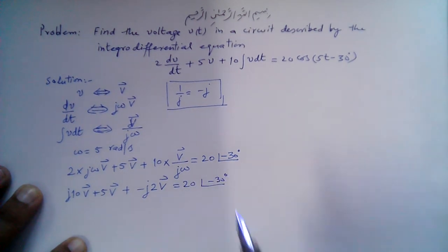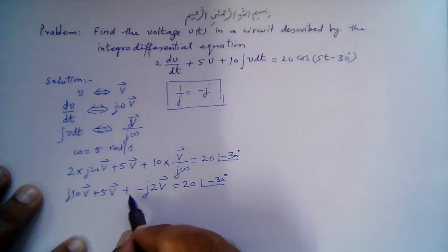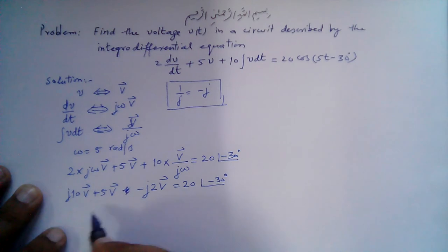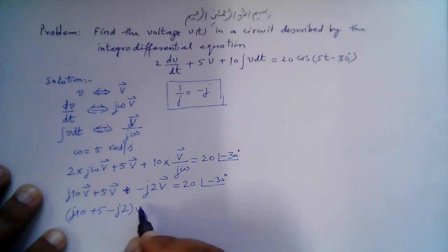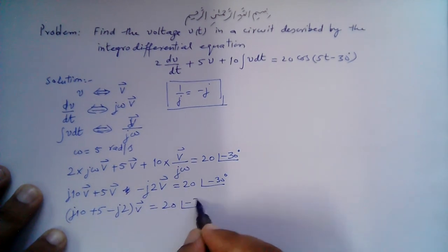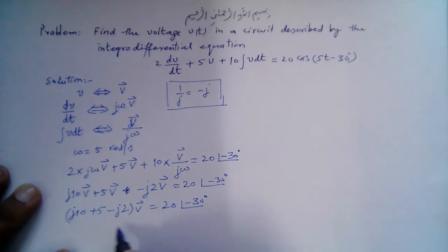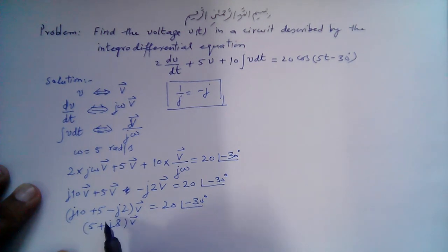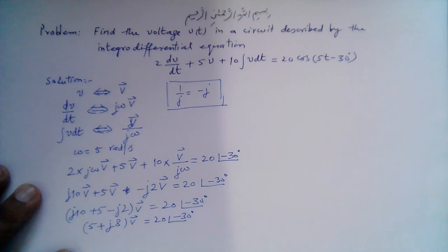Collecting V̄ as a common factor: (j10 + 5 - j2)V̄ = 20∠-30°, which simplifies to (5 + j8)V̄ = 20∠-30°.